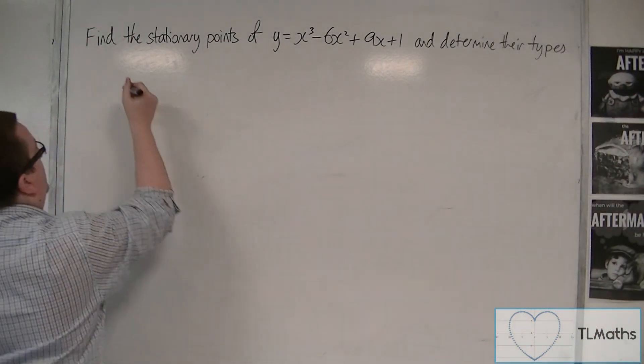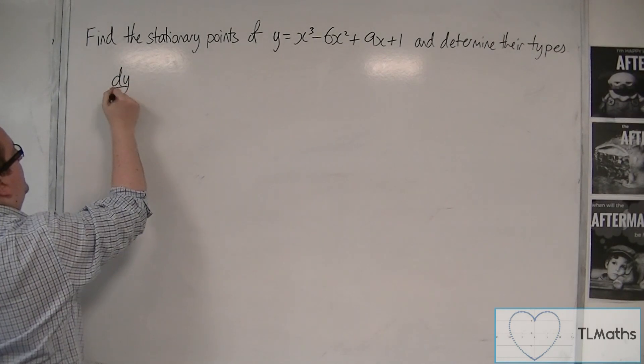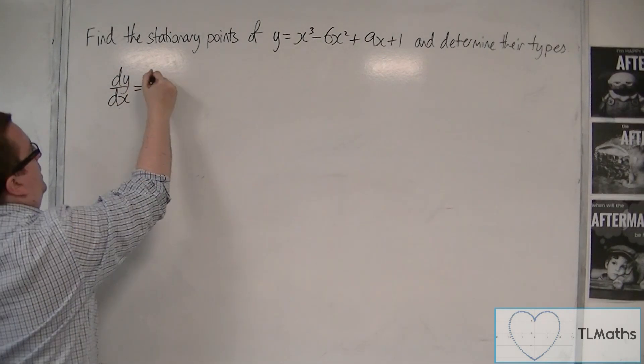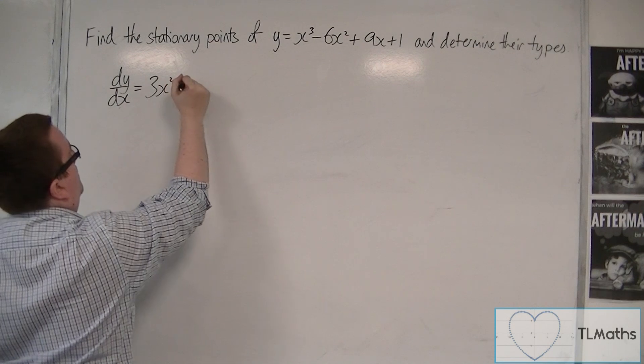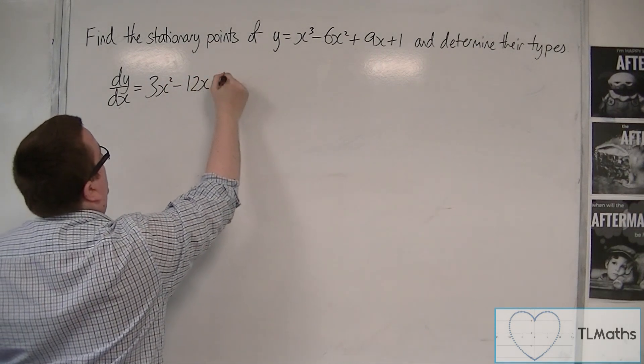We start off by finding the first derivative, dy/dx. That will be 3x² - 12x + 9.